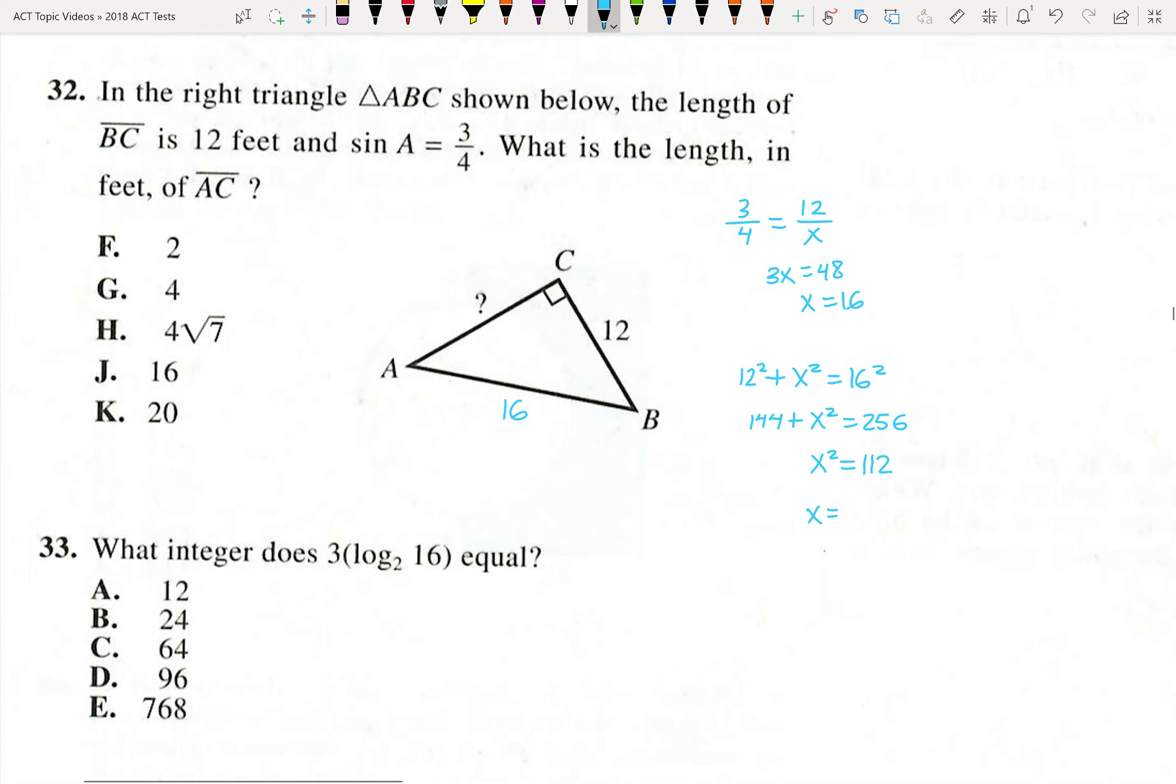And then x equals square root of 112, which simplifies as follows. 16 times 7 is that. So that would break down into square root of 16 times square root of 7, which would be equal to 4 root 7, answer choice H.